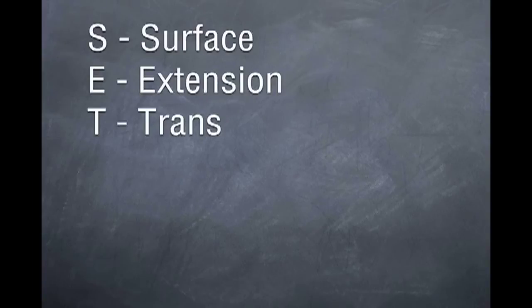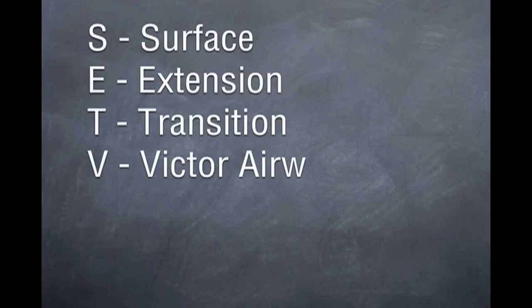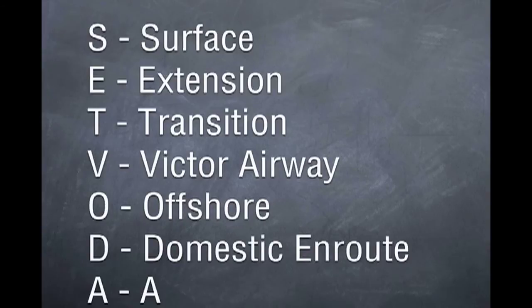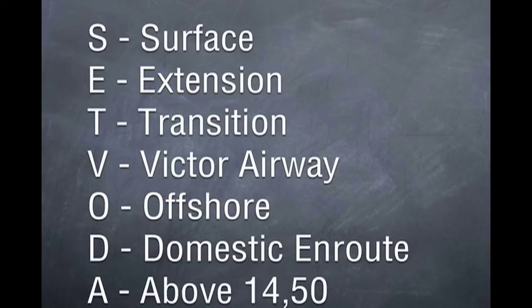The S is for surface. E is for extension. T is a transition area. V is our Victor Airways. O is our Offshore. D is our Domestic Enroute. And A is above 14,500 feet MSL.